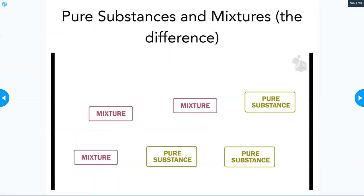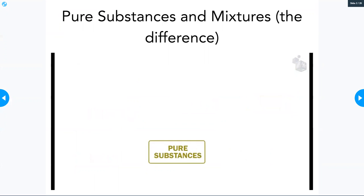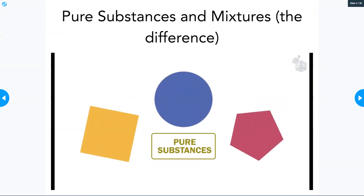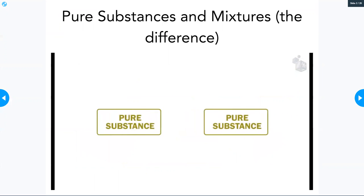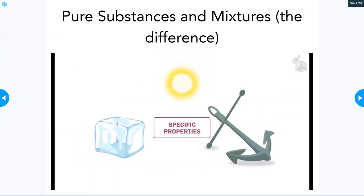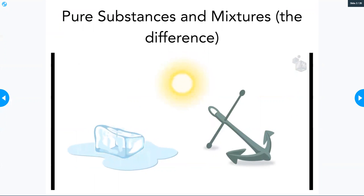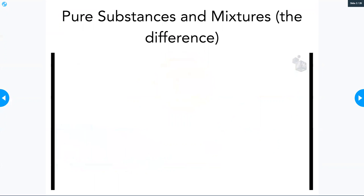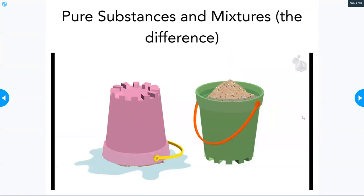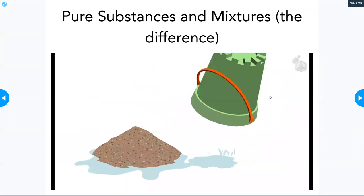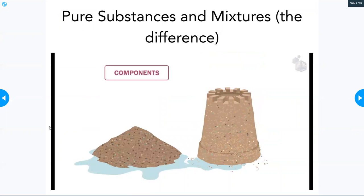Pure substances have a homogeneous appearance. Each pure substance is characterized by having specific properties that distinguish them from all other substances. In contrast, mixtures do not have specific properties — their properties depend on the substances or components that form them.